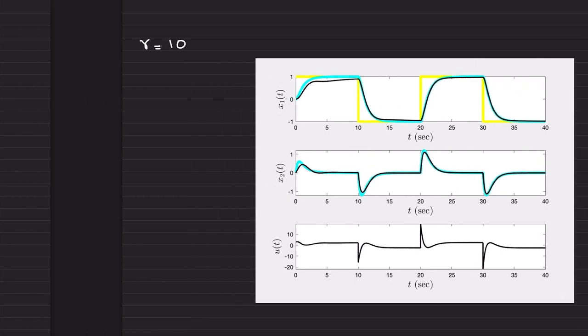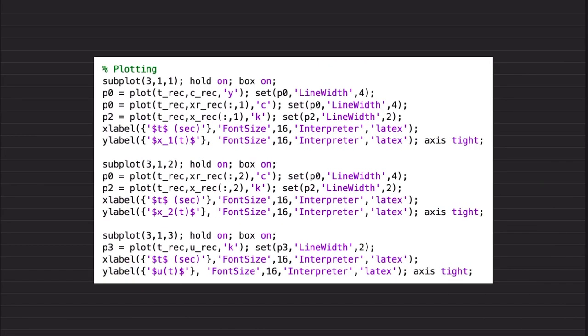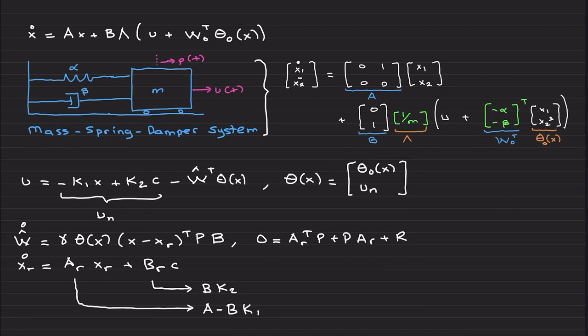So again, how to do that? Instead of—I will go here then finish the video, bear with me one more second—you know, instead of applying the command here and here, just apply the filtered version of the command. In time domain, c_f dot is basically some lambda times c minus c_f. This is also a low-pass filter, and you can select lambda to be one through three, four, five.